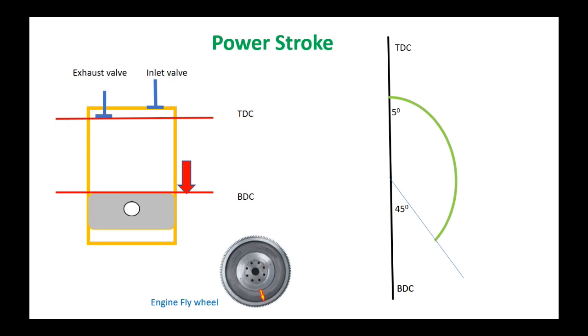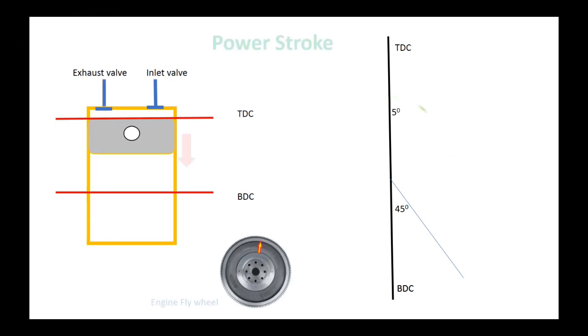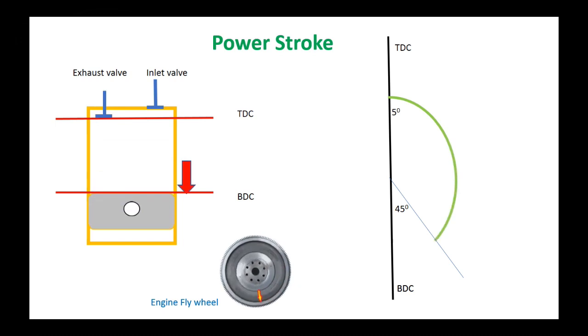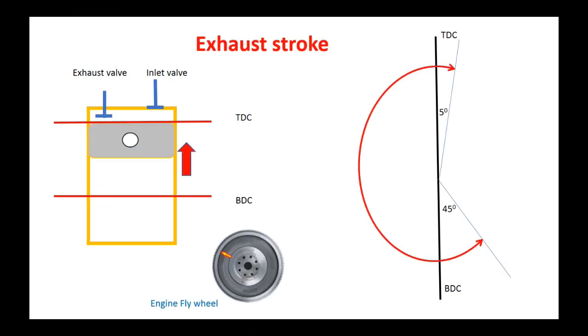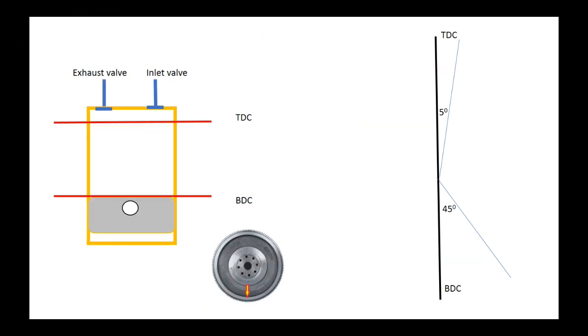And it starts to discharge the exhaust gas from the cylinder. Finally, see how to draw the diagram for the exhaust stroke. In this stroke, the piston moves from BDC to TDC and the flywheel turns nearly half around.